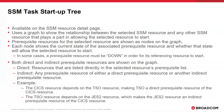For example, if a resource called CICS defines a single prerequisite resource of TSO, and the TSO resource defines a single prerequisite resource of JES2, then TSO is a direct prerequisite of CICS, and JES2 is an indirect prerequisite of CICS. If the CICS resource is selected for viewing, the CICS node will be shown at level 0, the TSO node will be shown at level 1, and the JES2 node will be shown at level 2.